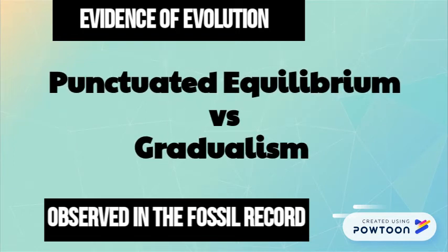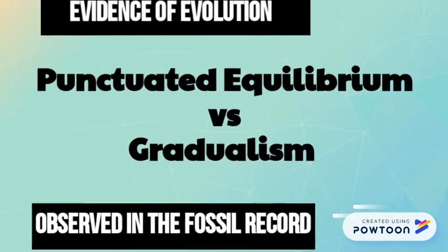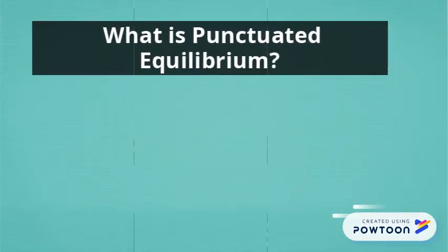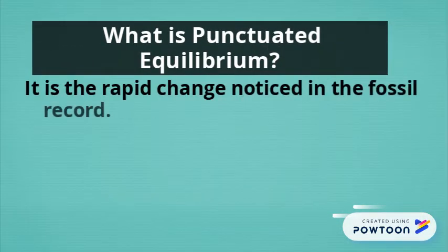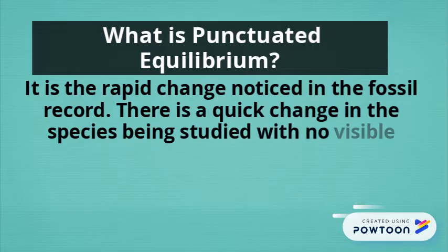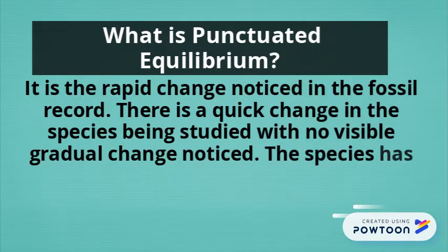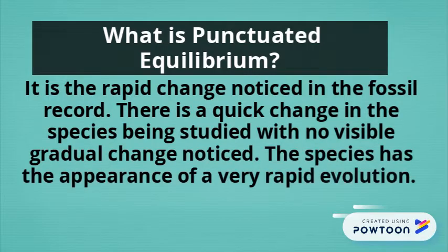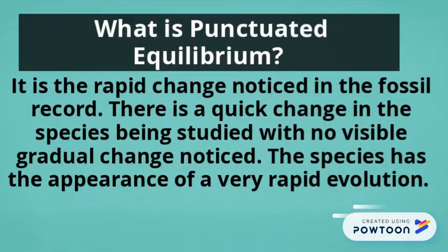This video will cover punctuated equilibrium versus gradualism. What is punctuated equilibrium? The easy definition is the rapid change noticed in the fossil record. The rest of the video will discuss how this occurs.